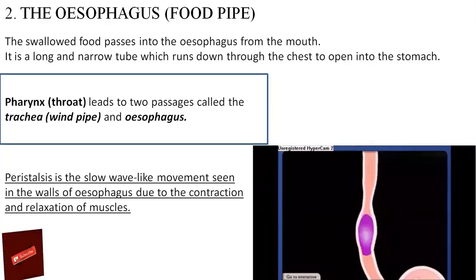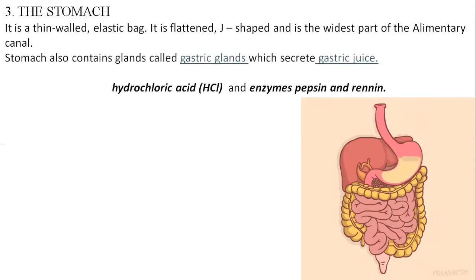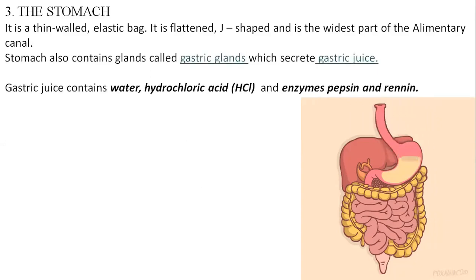The third organ involved in the digestive system is the stomach. After the food pipe, the food enters the stomach. The stomach is a thin-walled elastic bag — it is flattened, J-shaped, and it is the widest part of the alimentary canal — and it opens into the small intestine. The stomach contains glands called gastric glands which secrete gastric juice, and the gastric juice contains water, hydrochloric acid, and enzymes pepsin and renin.